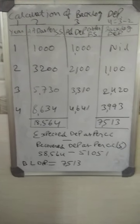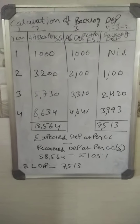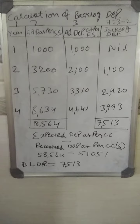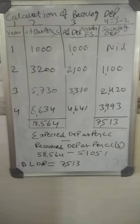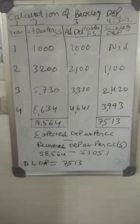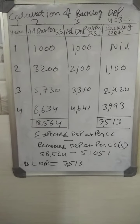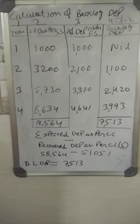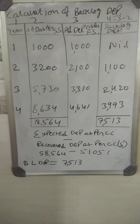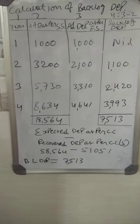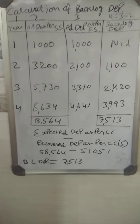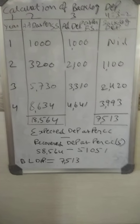Welcome, my dear friends. We have now come to the last stage of calculating the backlog depreciation. In this calculation, we have to take four columns. The first one is relating to year, and the next one is additional annual depreciation as per the second statement.